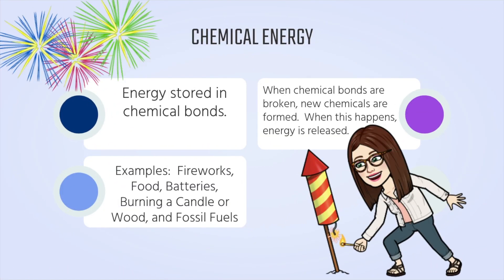Chemical energy is energy stored in chemical bonds. When chemical bonds are broken, new chemicals are formed. When this happens, energy is released. Some examples of chemical energy include fireworks, food — food gives us energy — batteries, burning a candle or wood, and fossil fuels.